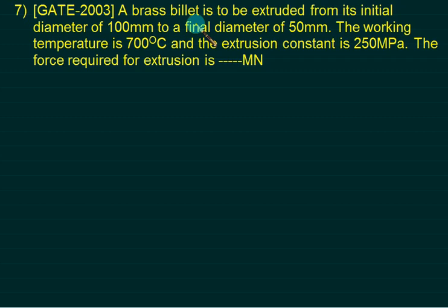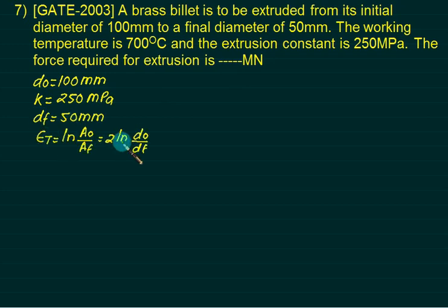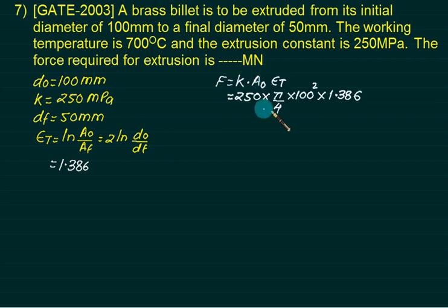Brass billet is to be extruded. Initial diameter 100 mm, temperature 700. Extrusion constant K is 250. What is the final diameter? True strain is ln of A0 by AF, 2 times ln of D0 by DF. How much force is required? K times A0. 250 into pi by 4 into 100 square into 1.386 equals 2.72 times 10 to the power 6 Newton, or 2.72 Mega Newton.